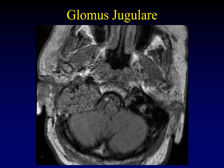The MRI appearance of a glomus jugulare tumor has been described as a salt-and-pepper appearance, as with all paragangliomas. White dots represent areas of thrombosed vessels, and dark black dots represent flowing blood — flow void. Those are supposed to represent the salt and pepper inside the lesion. It may not be the most useful interpretive tool, but it is the right answer on the test.